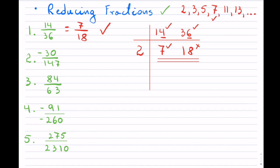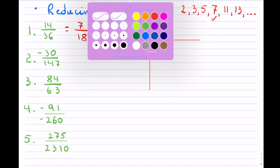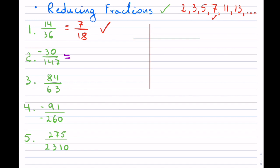Now I will take the second example: negative 30 over 147. If you are running into fractions that are negative, first check whether your answer will be negative or positive. In this case because we only have one negative, the answer will stay negative. Now I can simply worry about the numerator and denominator and see which prime will go into both.